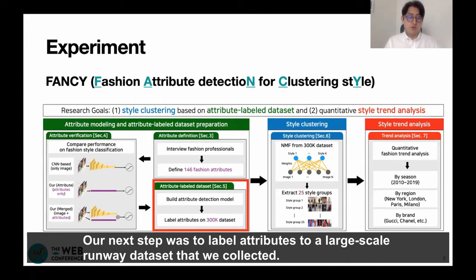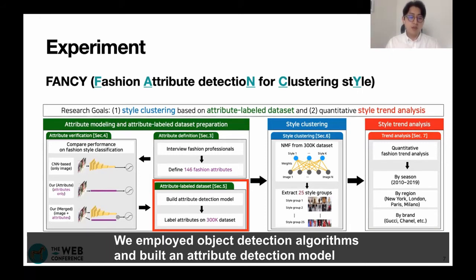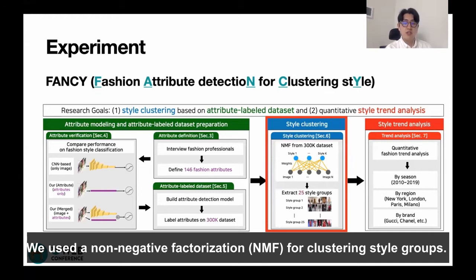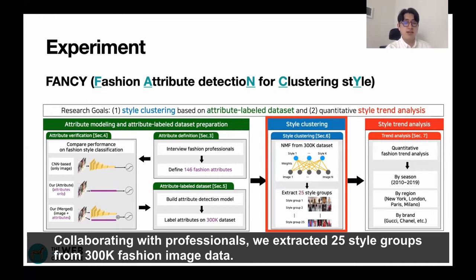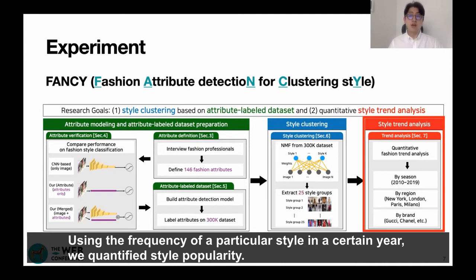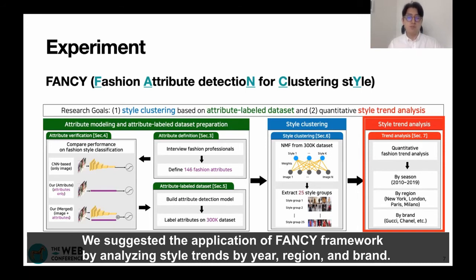Our next step was to label attributes to a large-scale dataset we collected. We implemented object detection algorithms and built an attribute detection model which yields regional performance for labeling over a large-scale dataset. We used non-negative matrix factorization, NMF, for clustering style groups. Collaborating with professionals, we extracted 25 style groups from the 300K fashion image data. Finally, we built the FANCY dataset, using the frequency of particular styles in certain years to quantify style popularity, and suggested application of the FANCY framework by analyzing style trends by year, region, and brand.